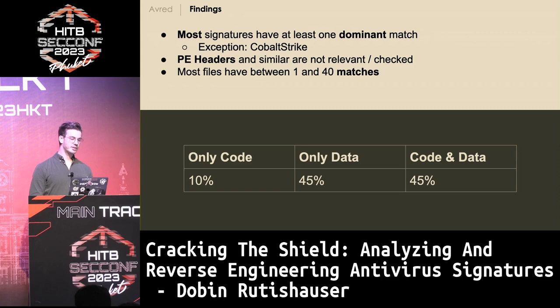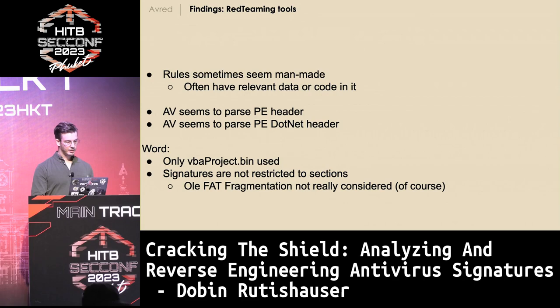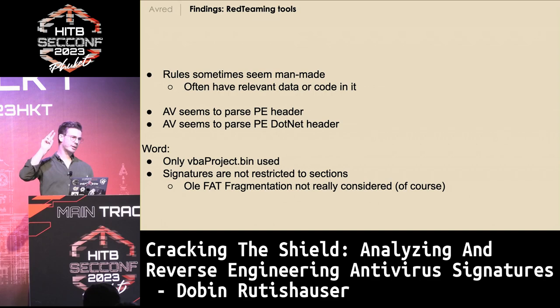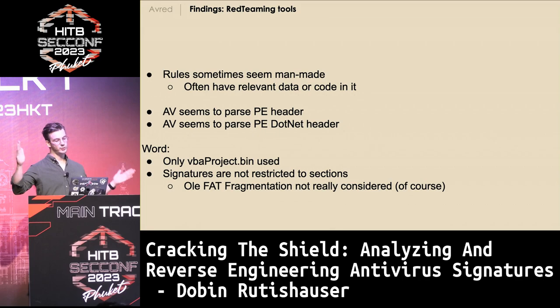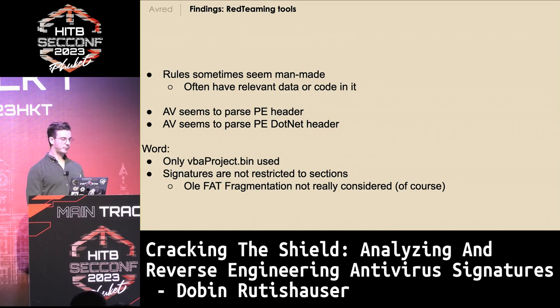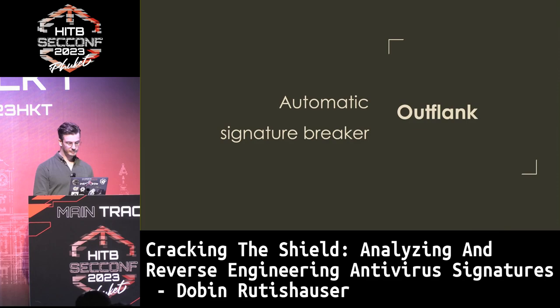Unlike old-school antivirus from the 90s, the code doesn't seem so relevant — it's more about what data is in the executable. Also, the signatures or matches often cover relevant parts of the file — they seem kind of man-made, sometimes not. It seems that PE headers and .NET headers are not considered when determining if the file is malicious. Also, all the work I did with defragmenting the VBA project file was unnecessary, because Yara-like rules just cover a wide range of bytes — the antivirus doesn't parse the VBA project file with all its sections and chunks and mini chunks.